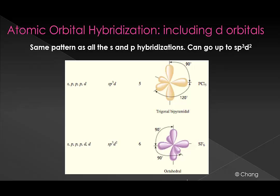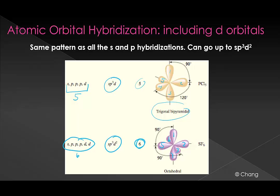We could keep going with this up to sp3d2. The same thing happens for sp3d and sp3d2 orbitals. For sp3d, we start with five orbitals and make five new orbitals, ending up with our trigonal bipyramidal structure. For sp3d2, we start with six orbitals and make six new orbitals, and a situation where we have six orbitals equal distance apart from each other is an octahedral electron geometry.